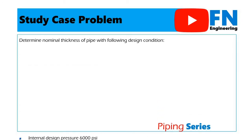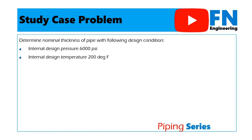Here is the study case problem which has to be solved using a spreadsheet or Excel program. We have internal design pressure 6,000 psi, internal design temperature 200 degrees Fahrenheit, nominal pipe size 6 inch, and pipe material using SA333 grade 8.